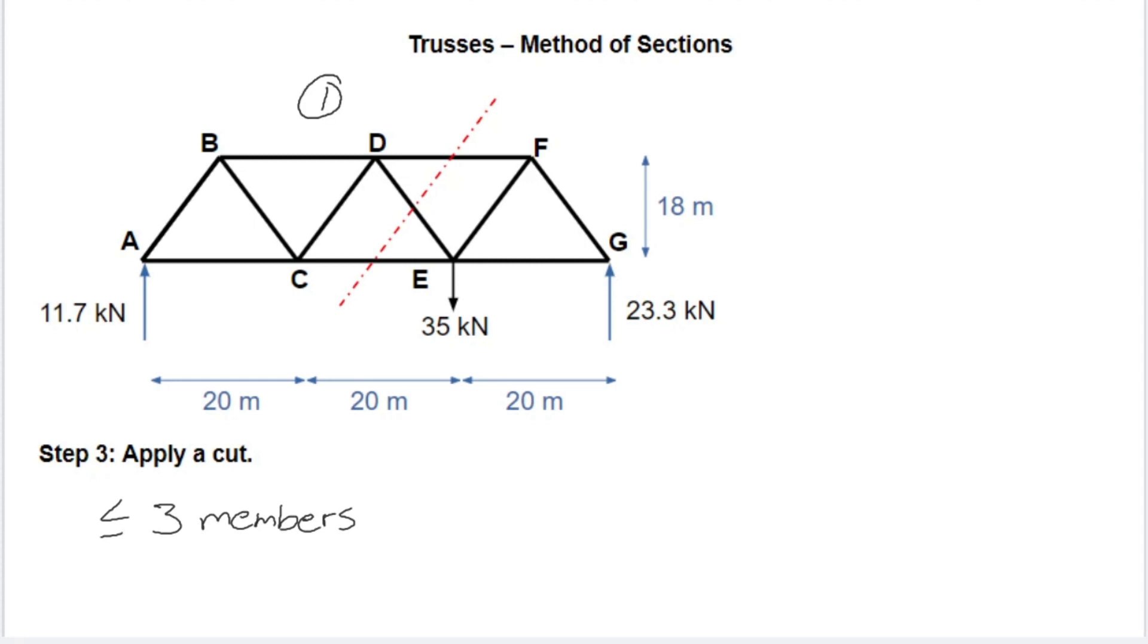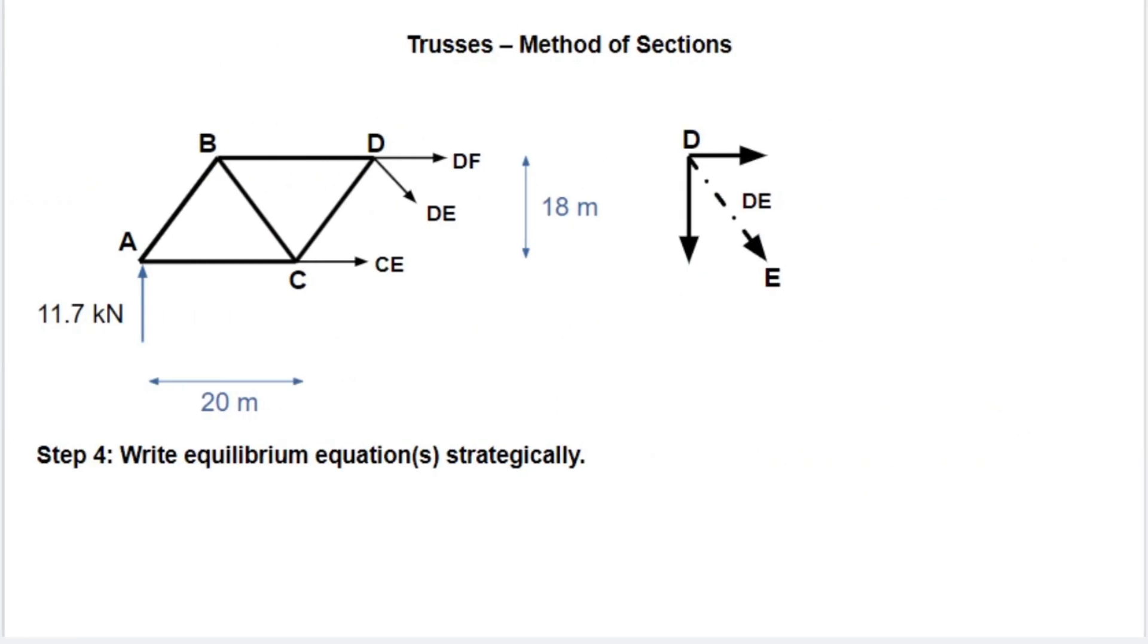And now our next step is to decide which side of the cut we want to solve with. So we have our left side here, side one, and our right side here, side two. This is, again, an arbitrary choice. You can use either one. I'm going to choose side one because we have our 35 kilonewton force on side two, so why have to deal with another force there? So we'll choose the left-hand side to make it simpler. And now our free body diagram will look like what you see here. So you can see that now we've included those internal forces.